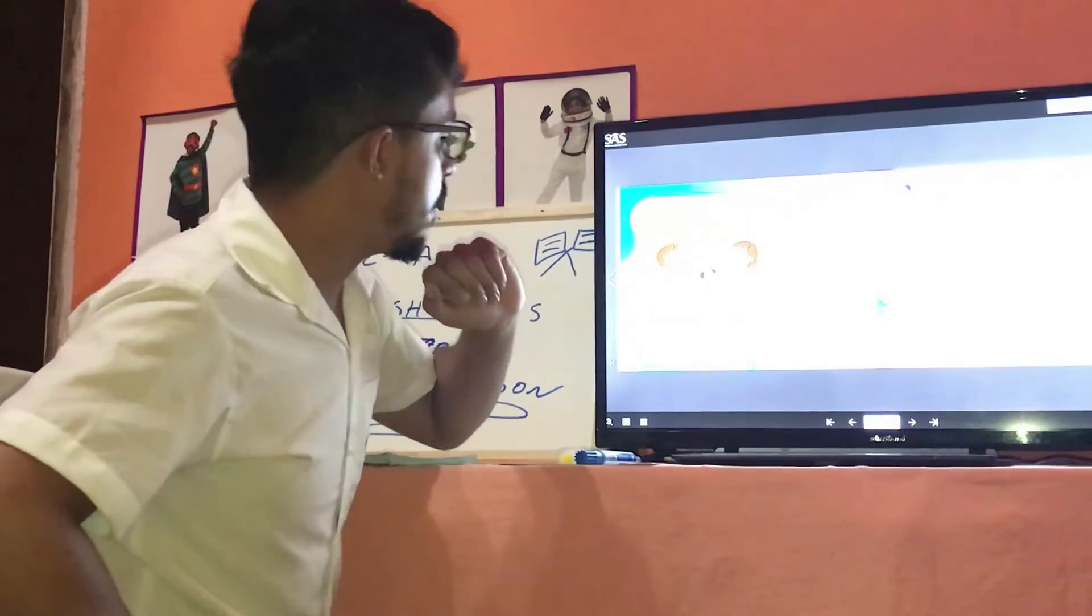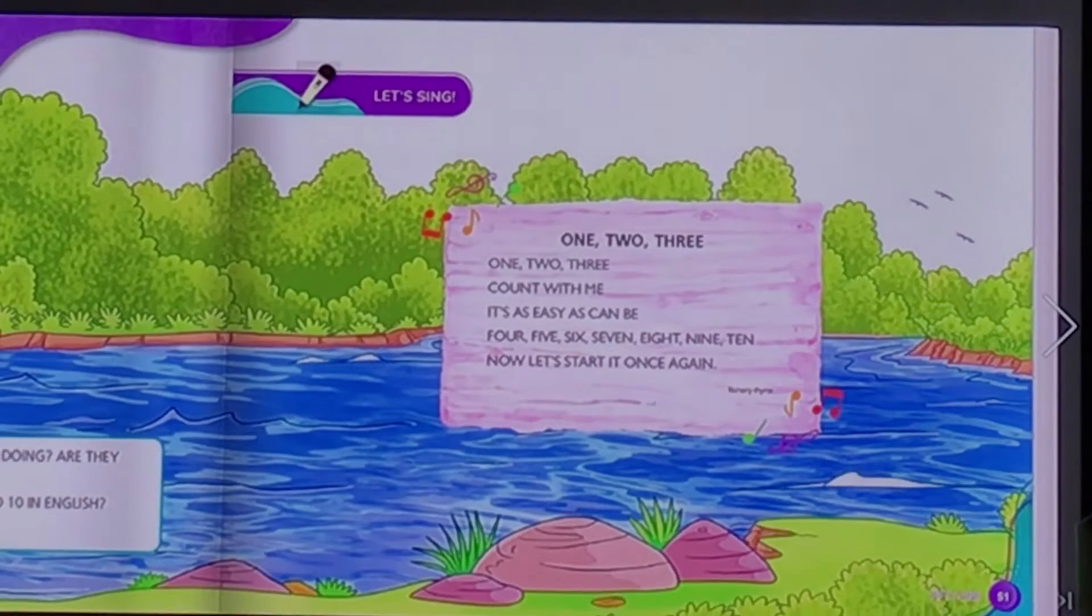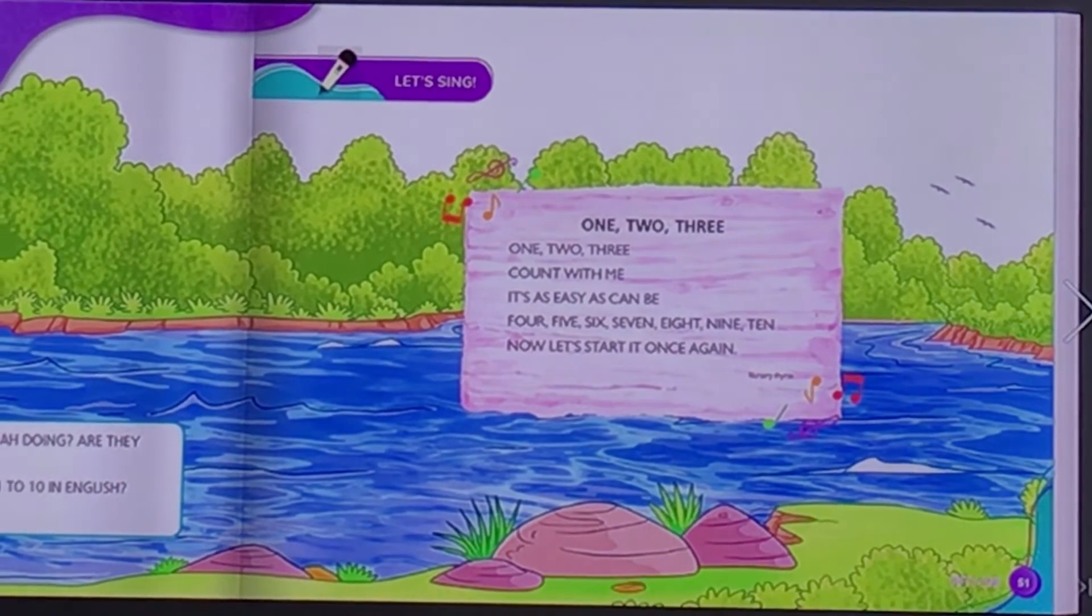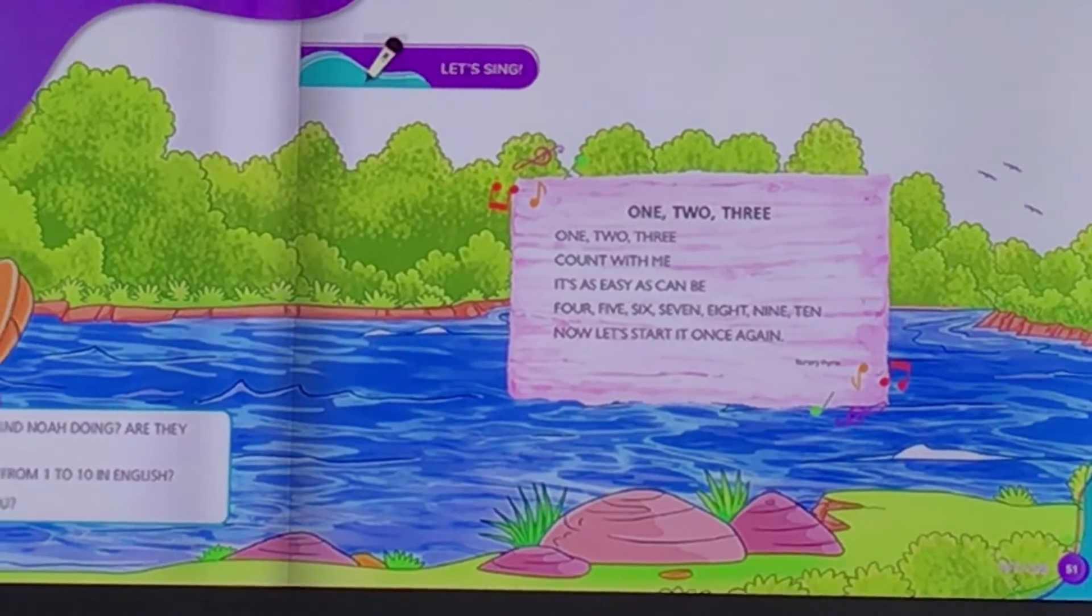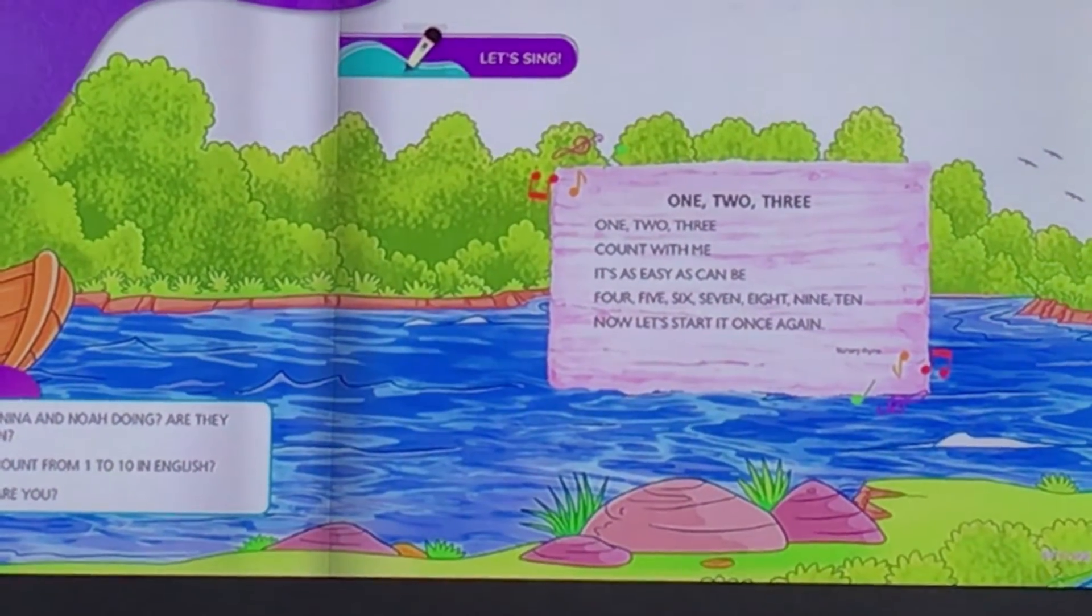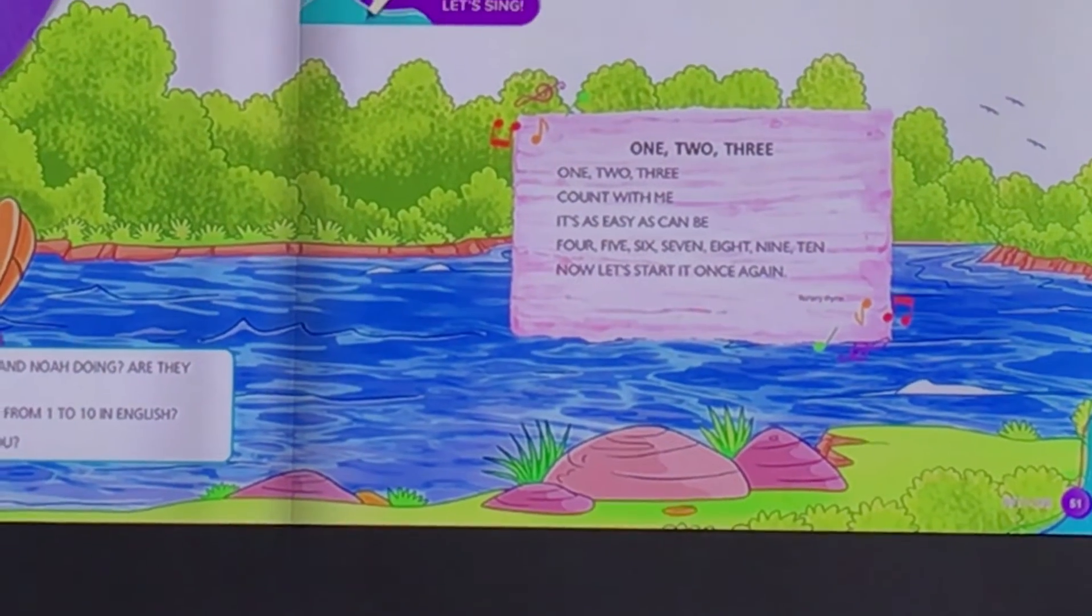E aqui na página 51, nós temos uma musiquinha que a gente vai cantar no ritmo do ABC Song. ABC Song é uma musiquinha que a gente já cantava na escola, e era a musiquinha do alfabeto, todos vocês conhecem. Então a gente vai cantar agora juntos com o mesmo ritmo. Let's go!